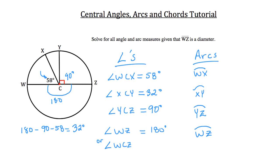Now we can do the corresponding arcs. The corresponding arcs are just going to be equal to the central angles. So arc W, X, which comes from this central angle right here, is going to be 58 degrees. And arc X, Y — which again comes from angle X, C, Y — is going to be 32 degrees.